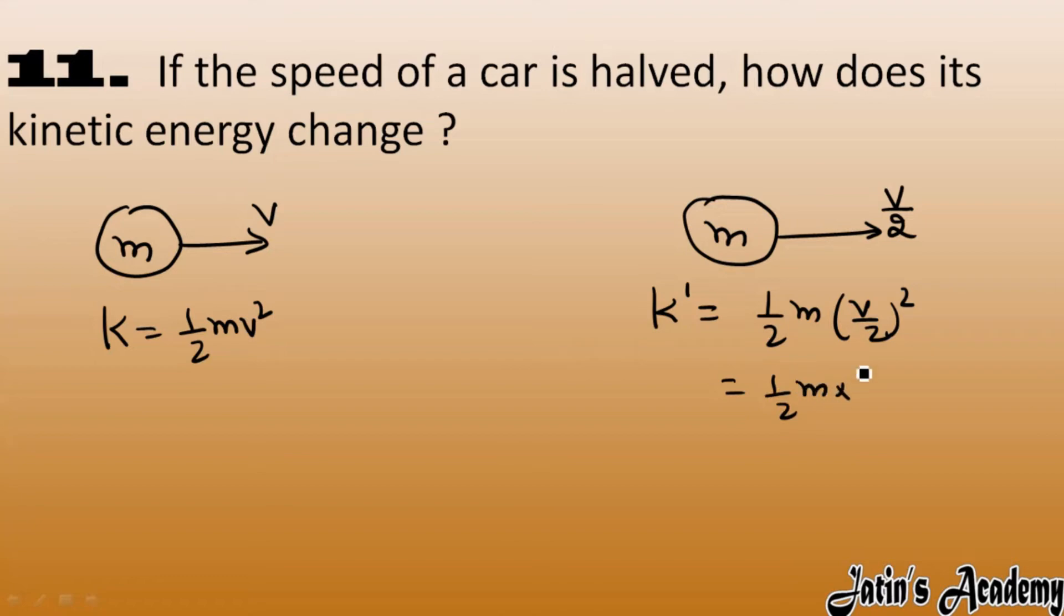When we multiply it, it becomes v square and 2 square. Here I can write v square and 2 square - 2 square we write as 4. Take 4 outside common: 1 by 4.